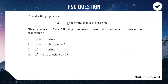The key is to find an example where the first half of the statement is true but the second half is not. We're looking for 2^n − 1 being composite, but then n needs to be prime. Looking at option D: 2^11 − 1 is divisible by 23, so the first part is true — 2^n − 1 is not prime. However, n = 11 is prime. So D is the example where the setup works but the conclusion does not, making it our counterexample that disproves the statement.